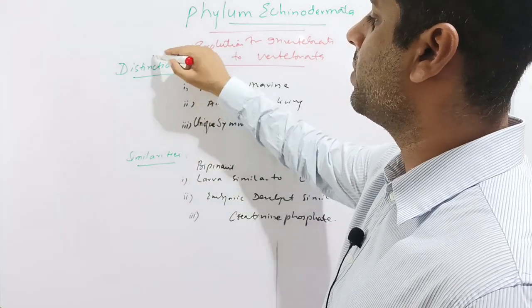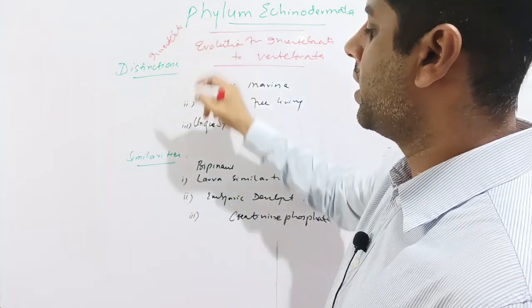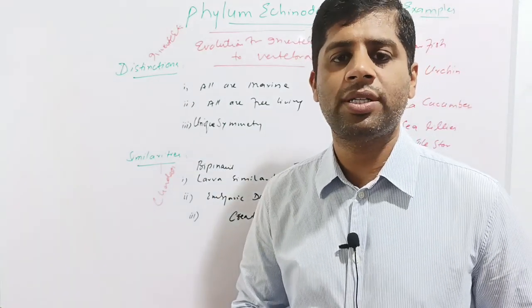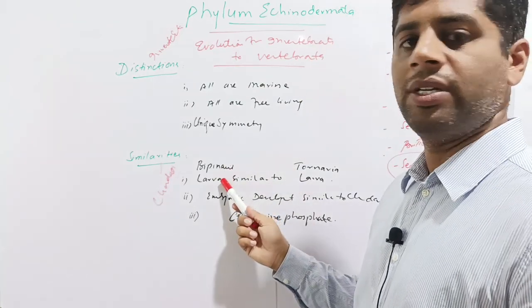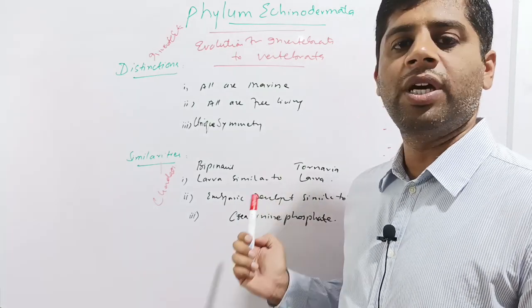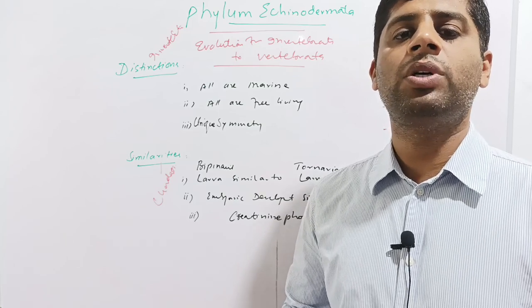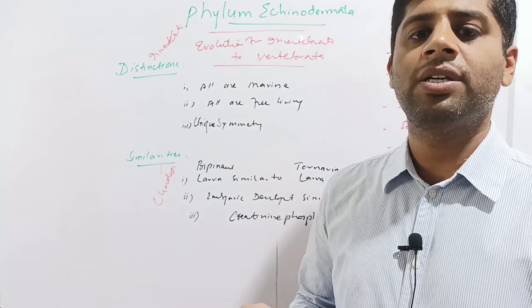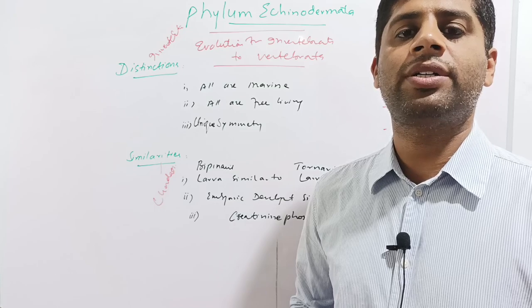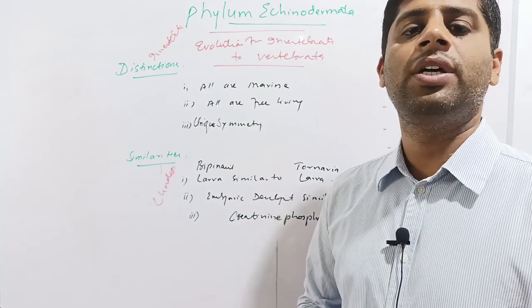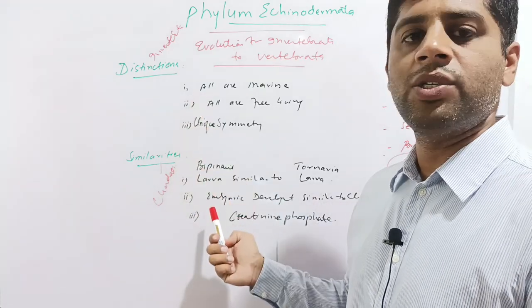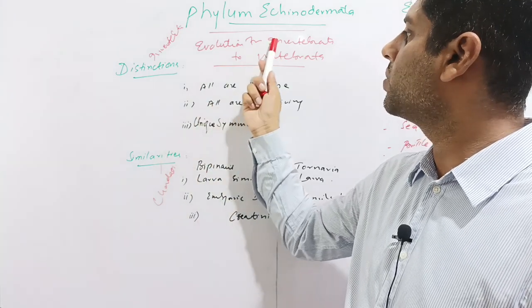Echinoderms also show three similarities to chordates and hemichordates. First, their bipinaria larva is similar in shape and symmetry to the tornaria larva of hemichordates. Second, the embryonic development of echinoderms is just like that of chordates — the ectoderm, mesoderm, and endoderm develop the same organs. Third, creatine phosphate, a high-energy molecule found in the muscles of vertebrates, is also found in the muscles of echinoderms.